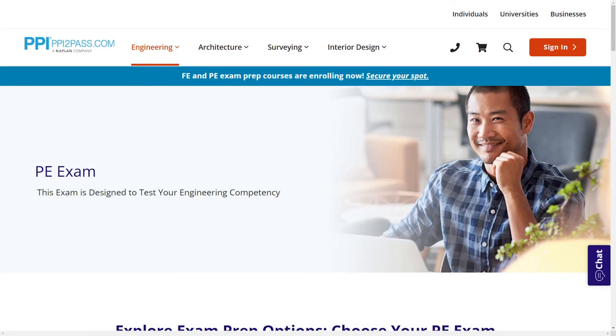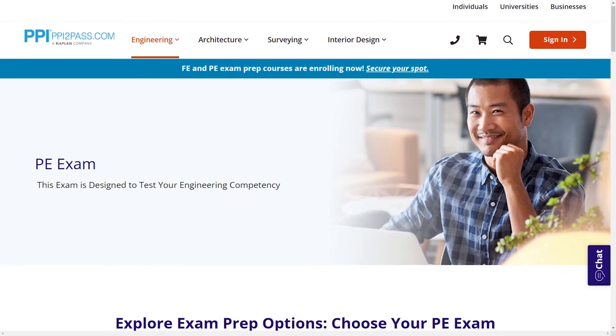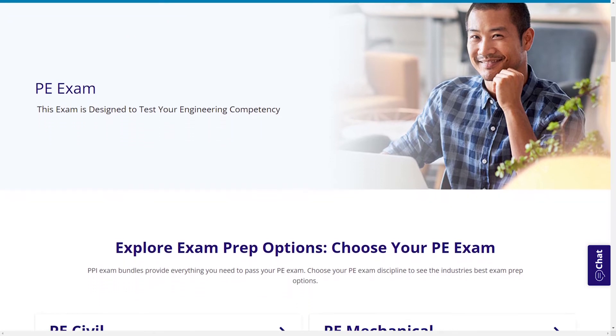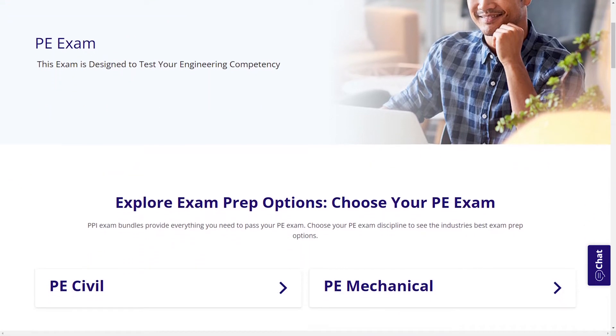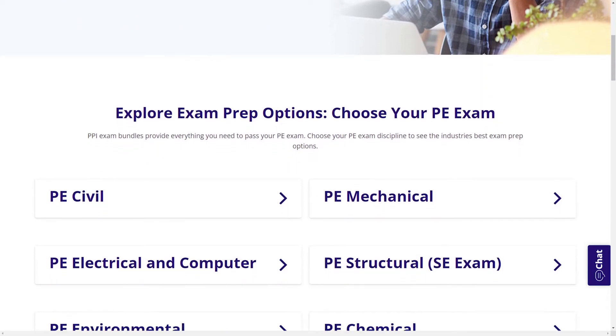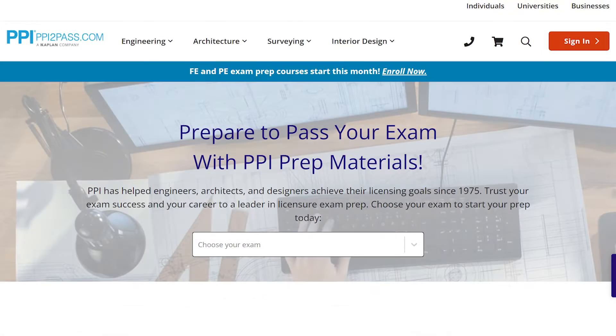When you take a live online course, PPI guarantees you will pass or you can take the on-demand course for free. With study guides, practice exams, and more, the PPI Learning Hub offers digital practice and review that you can take with you anywhere you have a device so that you can prepare during the times most convenient for you. Check out PPI today at ppi2pass.com to see all the options available for PE exam prep.